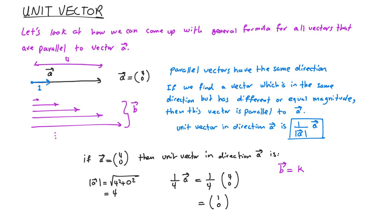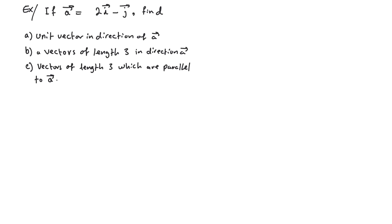If we want vector b to have a certain magnitude k, we write vector b = k × û_a, where û_a is the unit vector in the direction of a. The unit vector gives the direction with magnitude one, and multiplying by the scalar k gives whatever magnitude we desire.